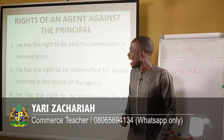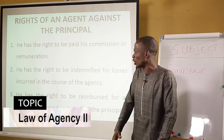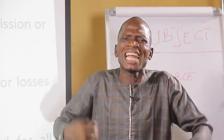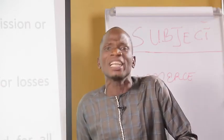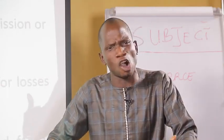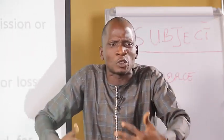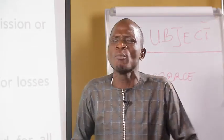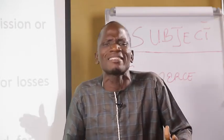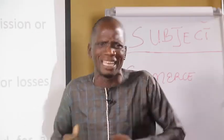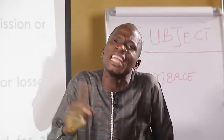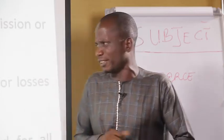Two, he has the right to be indemnified for losses incurred in the course of the agency. If there are losses incurred by an agent in running the agency, an agent has a right to tell the principal to indemnify him — that is, to compensate him. Maybe in the course of running the agency there are some misfortunes that may occur. In that regard, the principal must indemnify the agent because some of those things are unforeseen events in the time of the agreement.